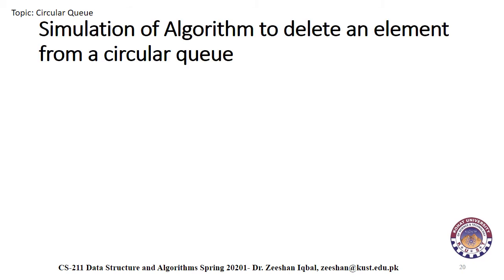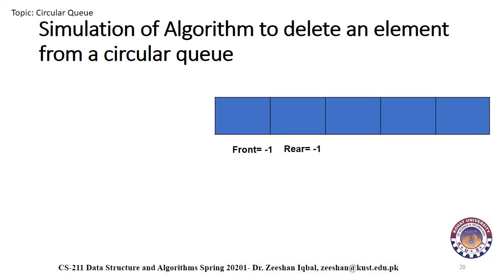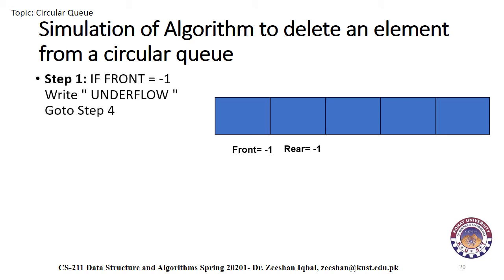While simulating the algorithm to delete an element from a circular queue, consider a situation where we have no values in the queue. Here, front equals minus one and rear equals minus one. In this case, the first if condition in step one will be true. The algorithm will write underflow and control will go to step four, exiting the function, as no value can be deleted from an empty queue.